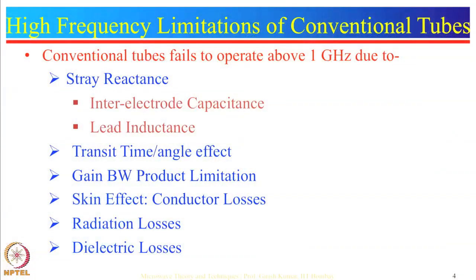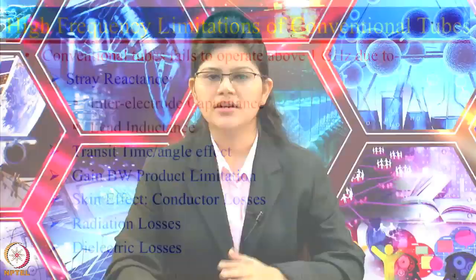However, these vacuum tubes are useful below microwave frequencies only, because at microwave frequencies conventional tubes have some limitations such as inter-electrode capacitance, lead inductance, transit time effect, gain-bandwidth product limitation, and so on. I will discuss these limitations one by one.